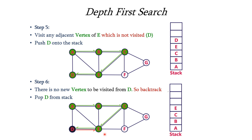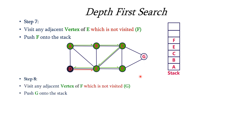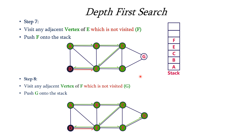Back at E, we check whether any unvisited adjacent vertices remain. Yes — F is unvisited, so we push F onto the stack and mark it as visited. Now F is at the top of the stack. The adjacent vertices of F are C and G. C is already visited, so we consider G, which is not visited. We mark it as visited and push it onto the top of the stack.